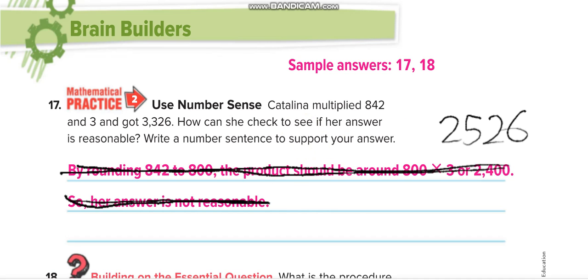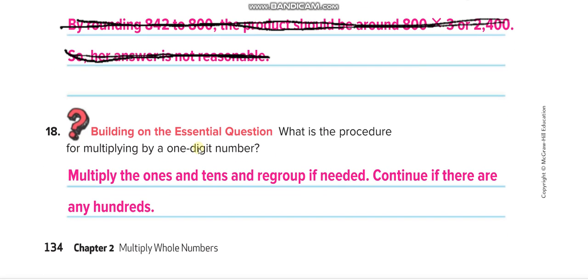Question number 18: What is the procedure for multiplying by a one-digit number? Multiply the ones. As I told you, first we multiply the ones and tens and regroup if needed. Continue if there are any hundreds.